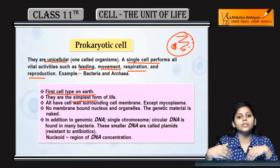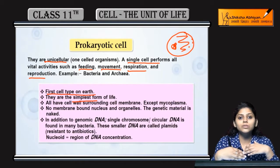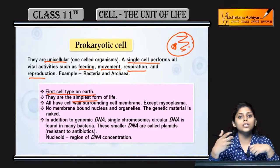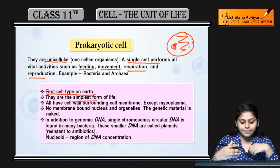अगर हम eukaryotic cells की बात करें, तो वो बहुत ही complex होते हैं. Complex इसलिए क्योंकि उनमें बहुत सारी organelles present हैं, जबकि prokaryotic cells में organelles present नहीं हैं.